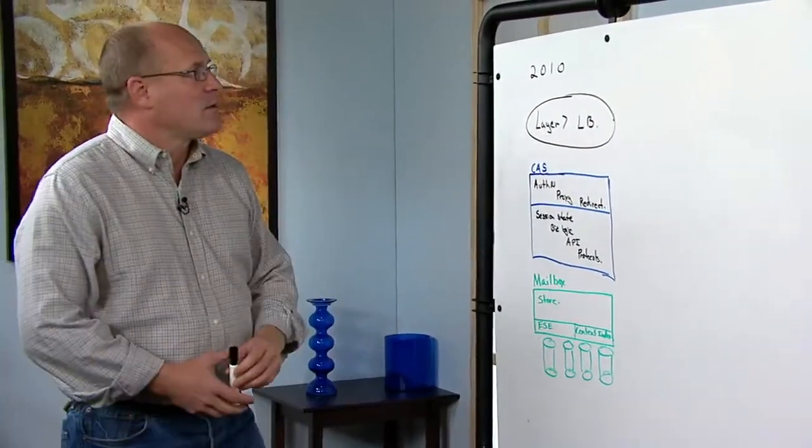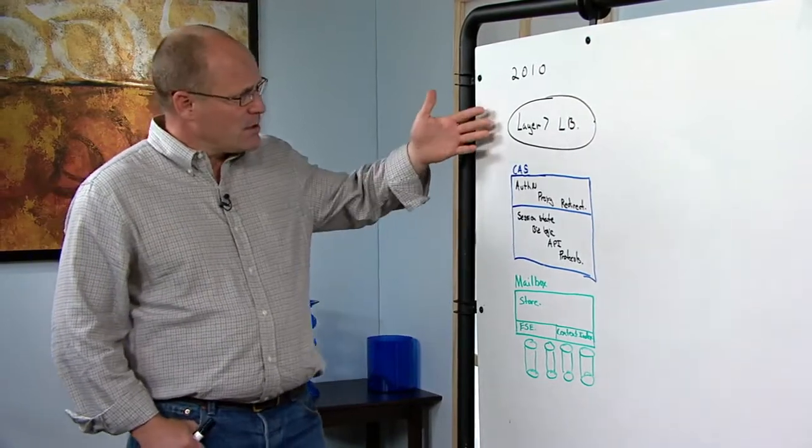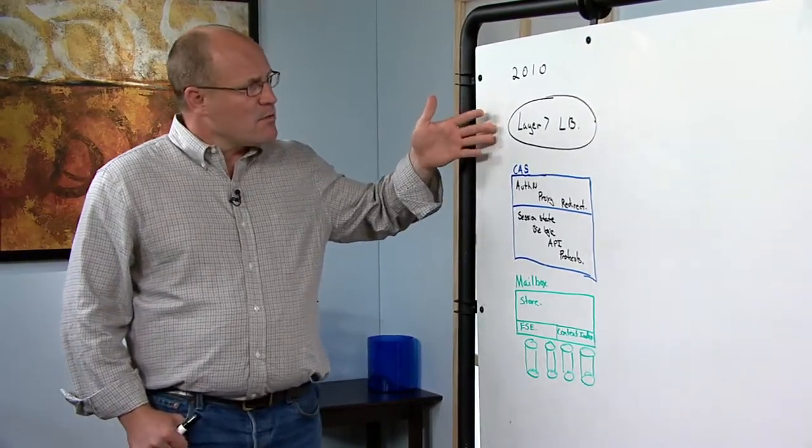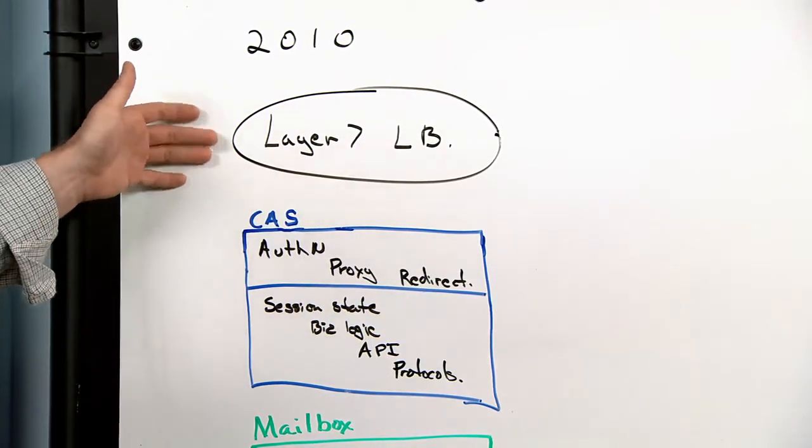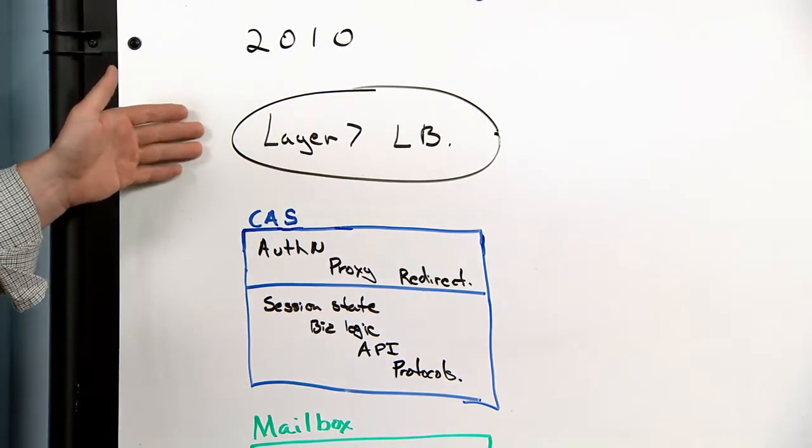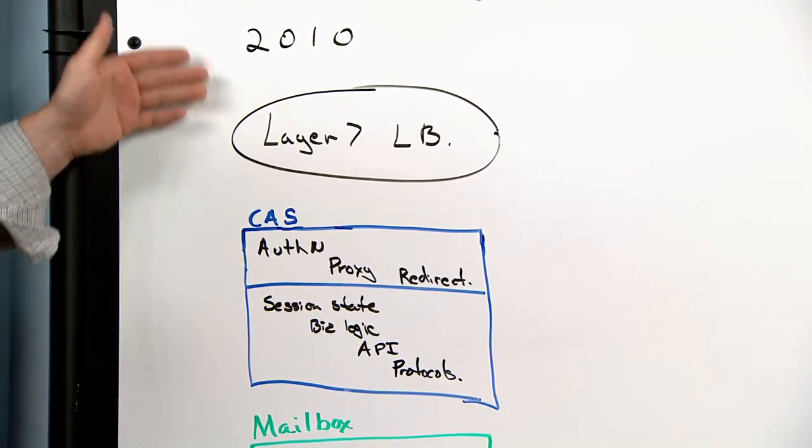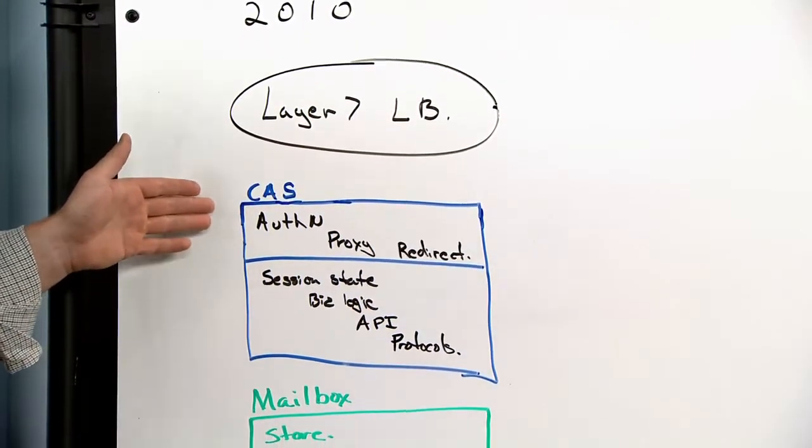Looking at a classic 2010 deployment, starting at the top, we have something that most people are going to have to deploy, which is called a layer seven load balancer. It's a fairly complex and expensive piece of equipment, hard to manage. And its job is to make sure that when requests come in, they stay sticky to a particular CAS server.